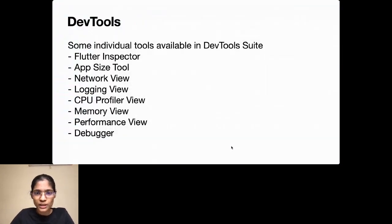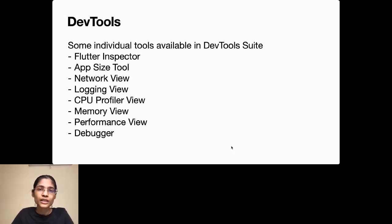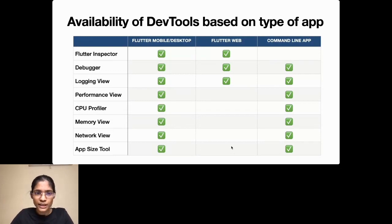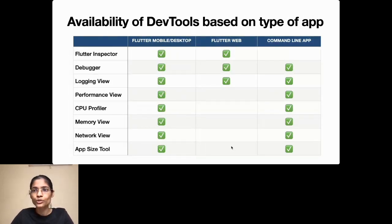We have a lot of tools in the DevTools suite, including: Flutter Inspector for UI issues, App Size tool for app size issues, Network View for latency when making API calls, Logging View, CPU Profiler View for monitoring CPU resource usage, Memory View, Performance View, and Debugger. All these DevTools are available for Flutter mobile and desktop. For Flutter web, we have Flutter Inspector, Debugger, and Logging View — other tools like Performance View, CPU Profiler, Memory View, Network View, and App Size Tool require Chrome DevTools.